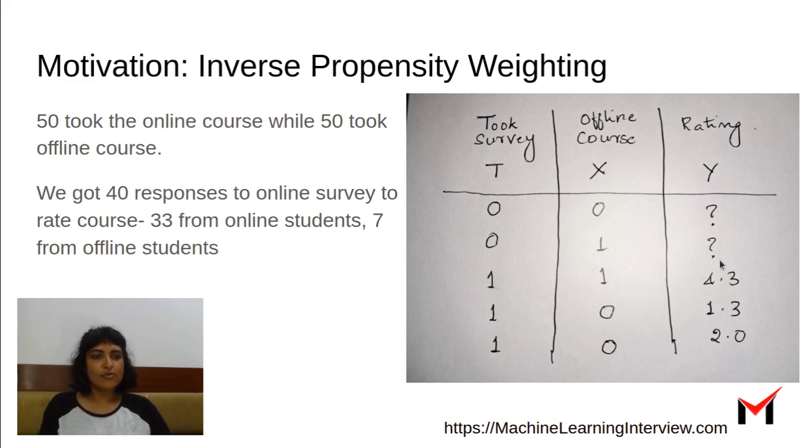So it's possible that the offline students in general maybe gave a higher rating. So maybe the rating is like 4.3 when the course is offered offline, which is one here. And for the students who took the course online, the rating maybe is lower. So if we just take the average of all the values in this column Y, which is the rating column, we might get an average that is not representative of the offline students' opinion, because very few of the offline students actually responded. How do we bump up the weight given to offline students?